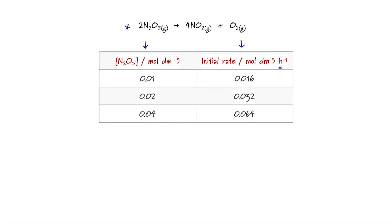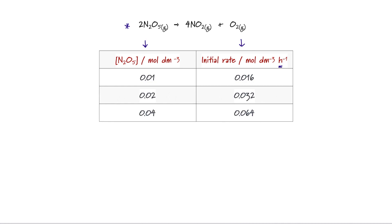Before we go any further, I'd like you to have a think about how the set of results was actually achieved. Because the topic of reaction kinetics at A level is completely dependent on you understanding how the experimental work ties up with the theory. This is a classic experiment where we have taken the dinitrogen pentaoxide at a concentration of 0.01 mol dm⁻³ and measured the rate of the decomposition. The experiment was then repeated twice more.